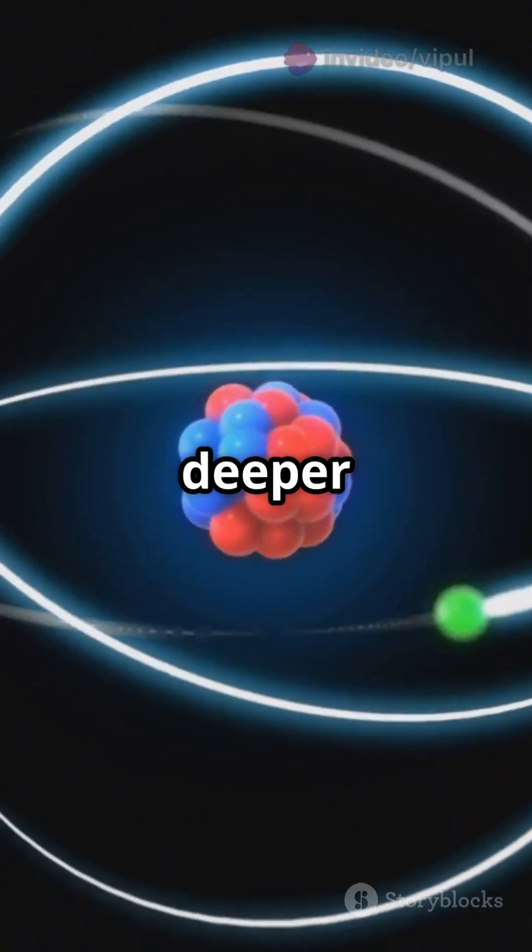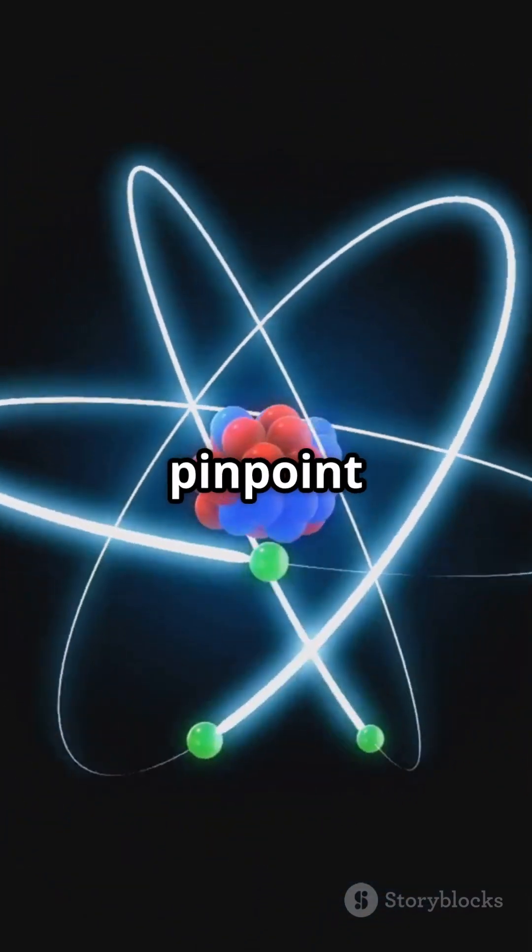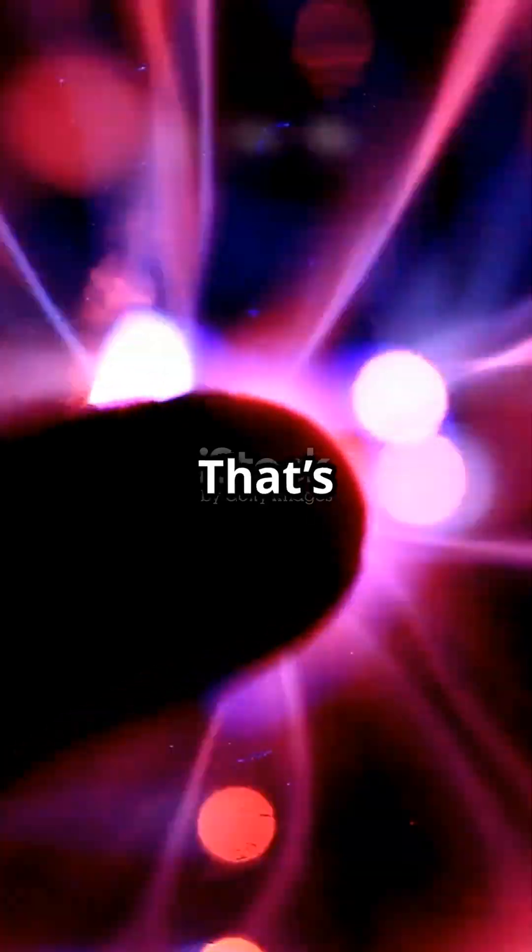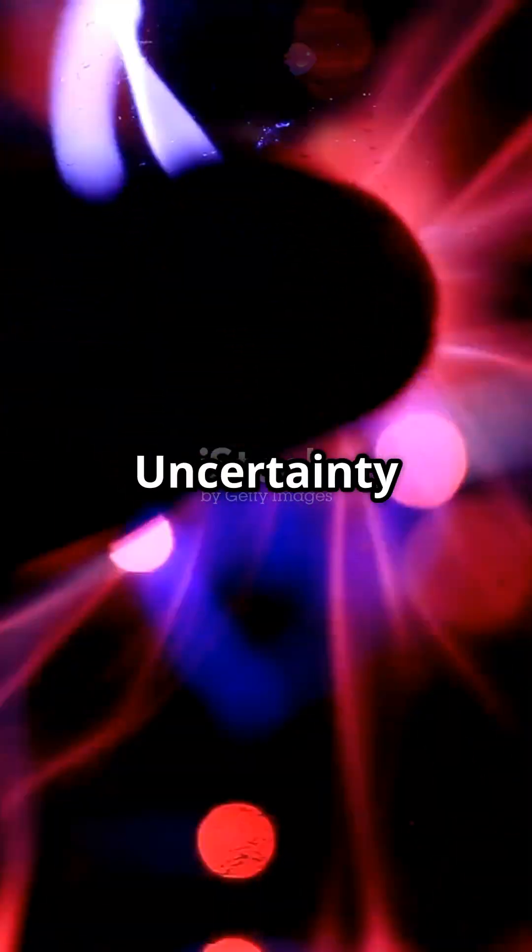But this idea raised a deeper question. Can we ever pinpoint where an electron is and how fast it moves? That's when Heisenberg introduced his uncertainty principle.